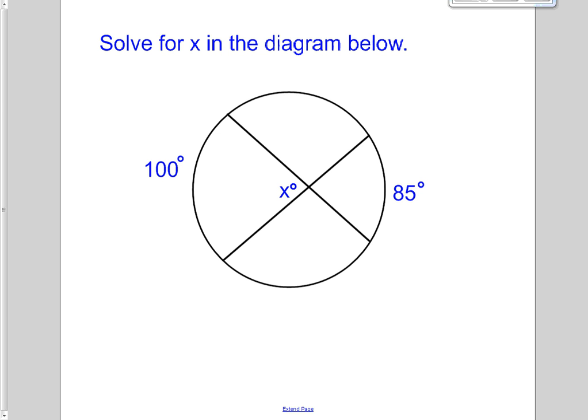Another similar case right here. This one, I've got my vertex on the inside. So this is my in scenario. And the in scenario says that x is going to be 100 plus 85 divided by two.